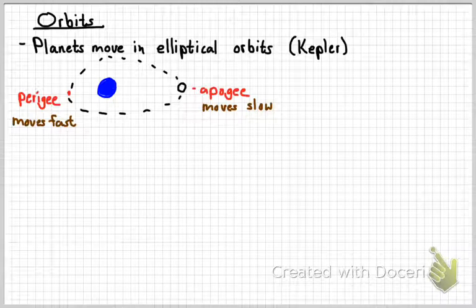Remember, at perigee, the moon or satellite or whatever you're talking about is moving really fast. And at apogee, it's moving really slow. You do need to know those things.